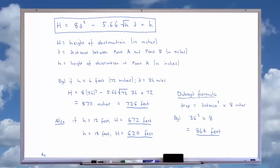To put it into practice, we will apply it to a distance of 36 miles with an observer's height of 6 feet. Example, large H = 8 times 36^2 - 5.66 times sqrt(72) times 36 + 72, which equals 8,711 inches, which equals about 726 feet.